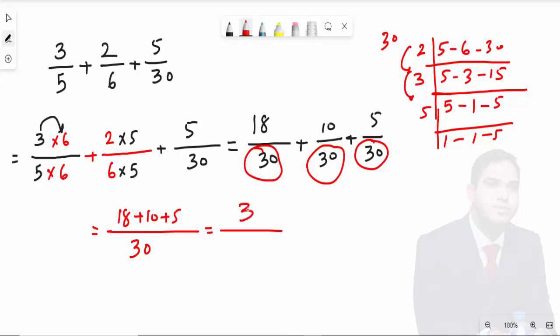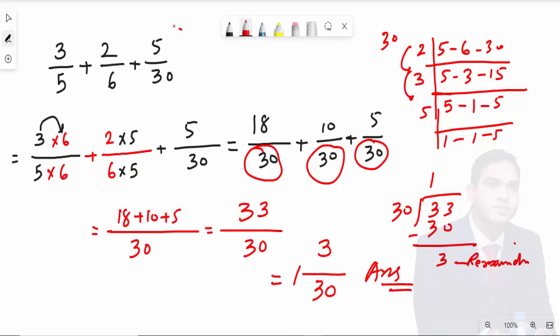You can further simplify it: 30 divisible into 33... 30 ones are 30, minus... the remainder will be 3. This is the remainder. 1 whole 3 by 30 will be the answer of this fraction.